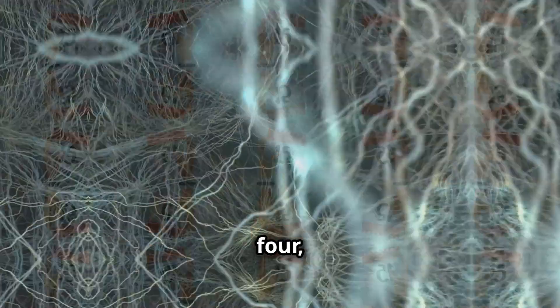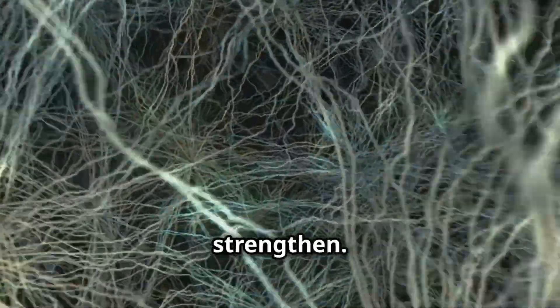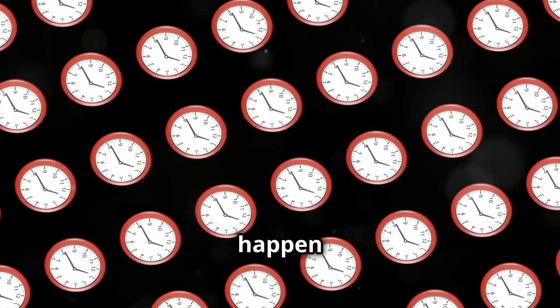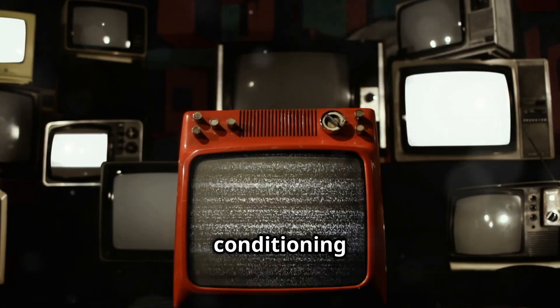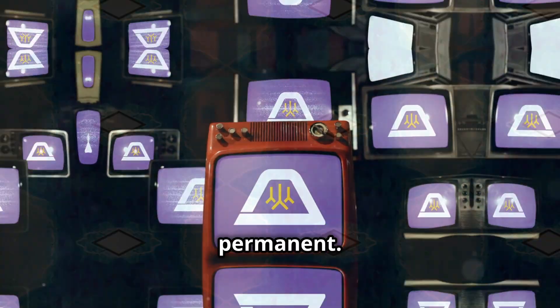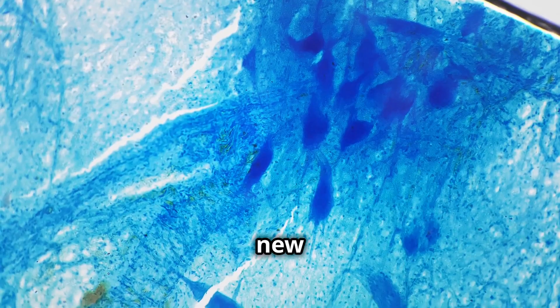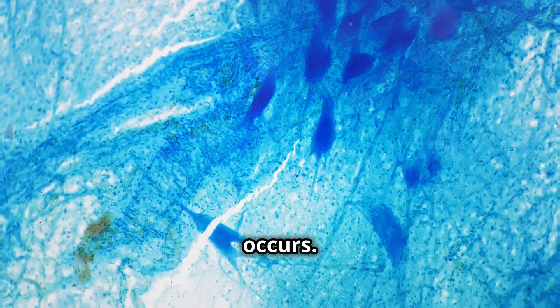By weeks two through four, the new neural connections begin to strengthen. Plasticity doesn't just happen overnight. It's a process that requires repeated, intentional conditioning to make the new pathways more permanent. This is when synaptogenesis, the formation of new synapses between neurons, occurs.